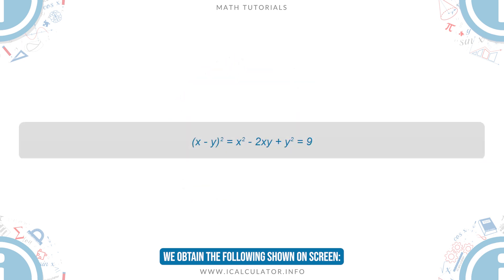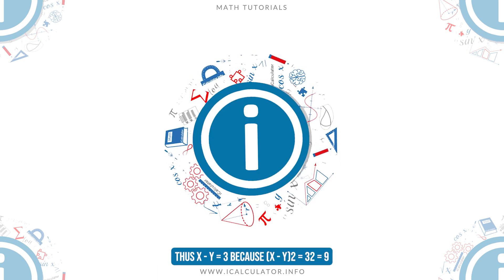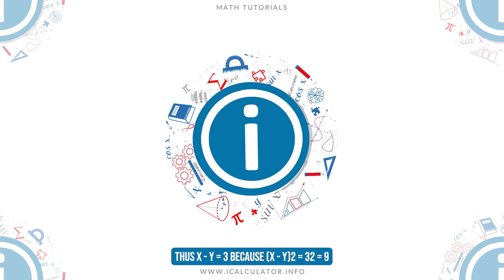Thus, x minus y equals 3, because x minus y squared equals 3 squared equals 9.